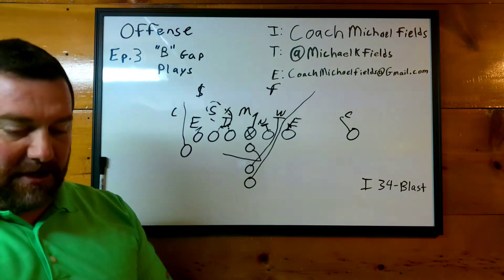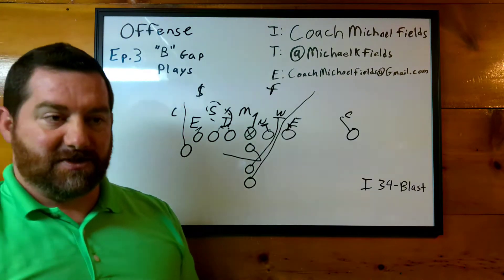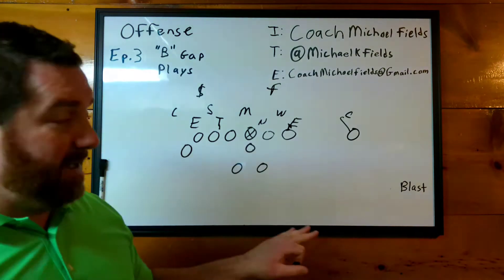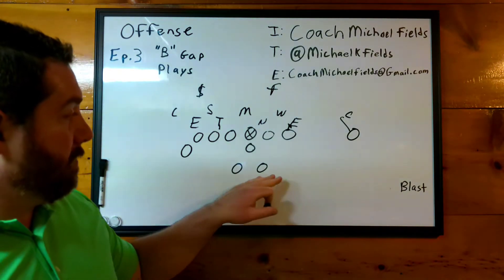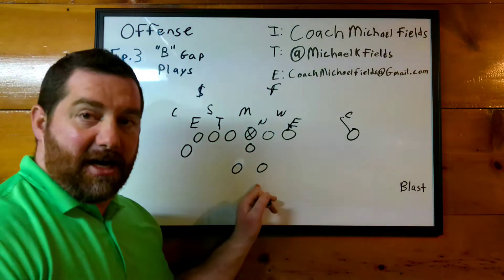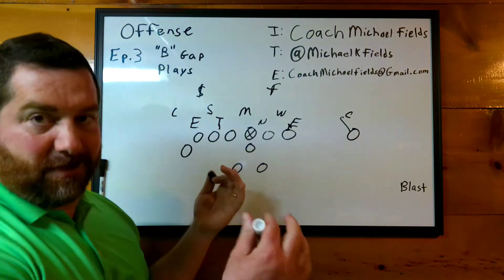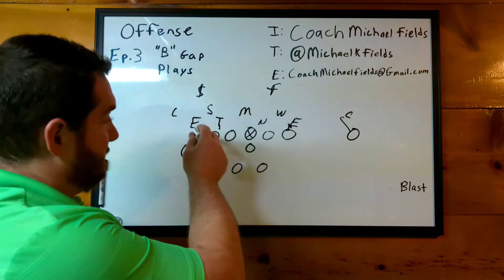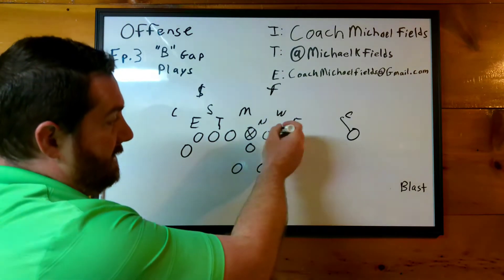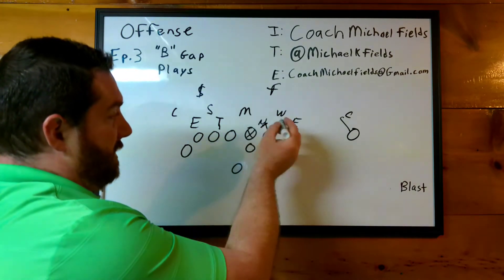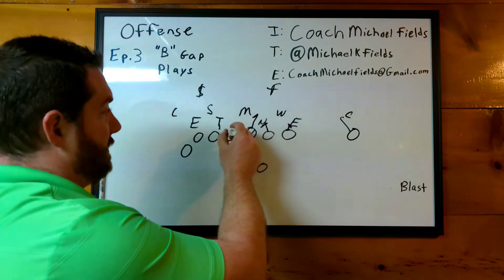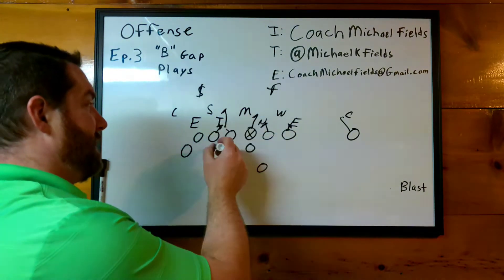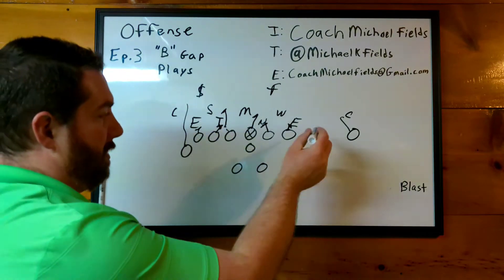We're going to draw it up in a couple of different situations as well. Sticking with our B gap plays, still running blast — but now instead of out of the I, we're going to run this with split backs. I used to call this the pro set because we had two backs, more like a pro series. Our wing is still here, tight end's here, so we're still going weak. Up front, nothing really changes — we're going to put the wall in there, double this guy, climb over the top, fan, run him off.